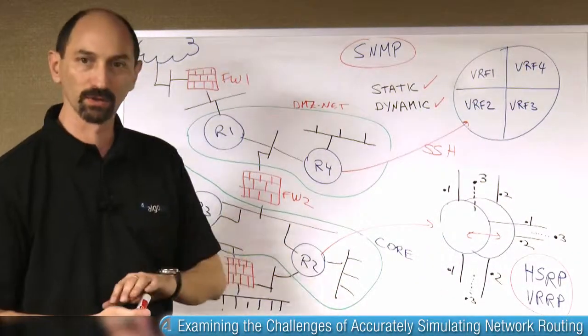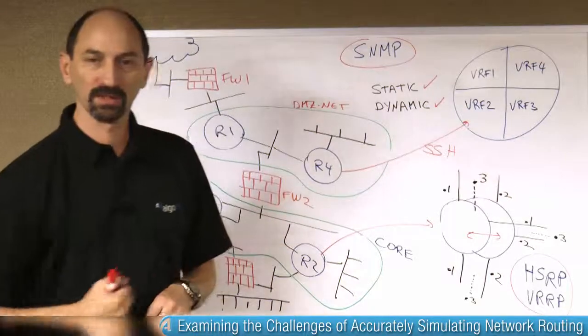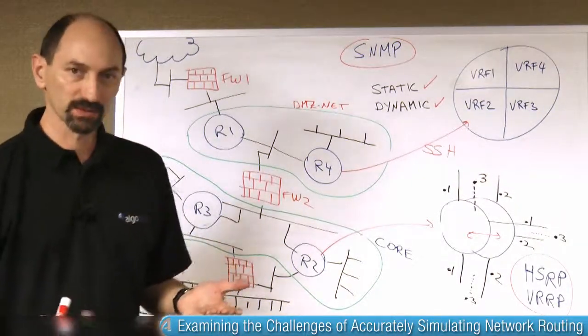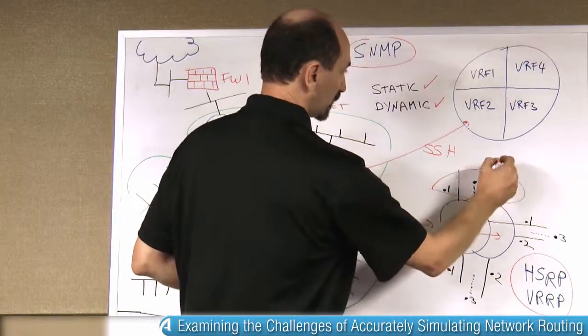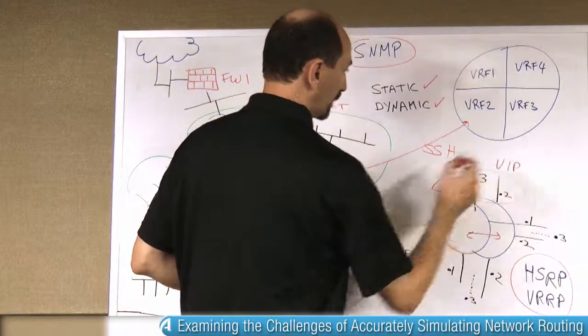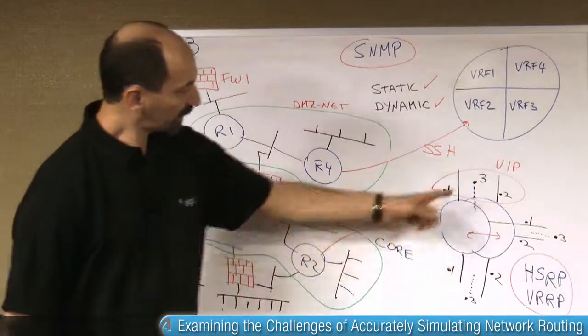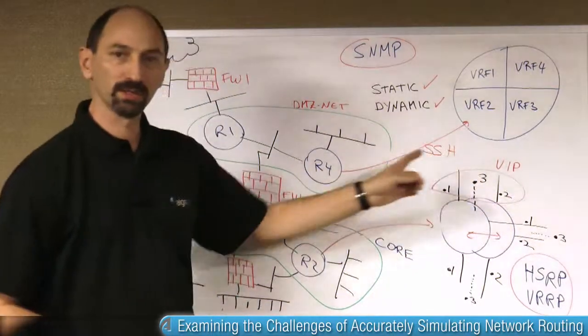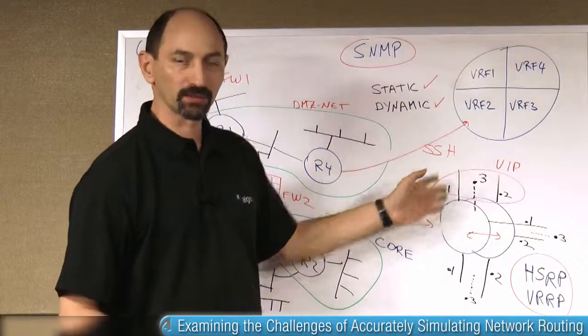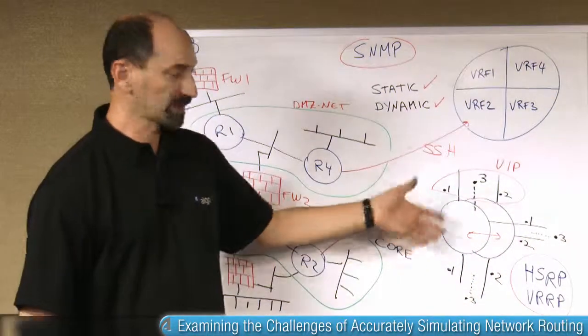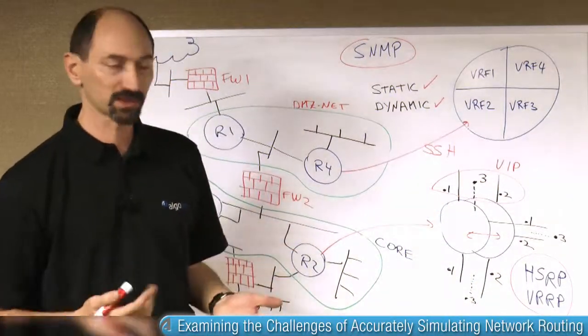So the way this is resolved is that there's a third IP address that's usually called the virtual IP or VIP. And that third IP floats between the two interfaces and is associated with one interface or the other depending on which physical router is currently the primary and which is the secondary.